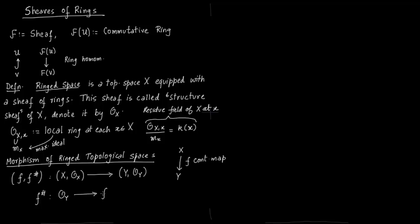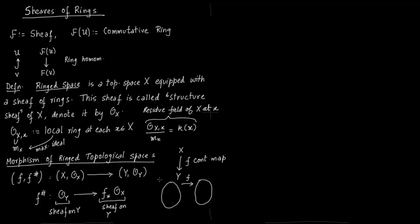F# is a morphism of sheaves of rings. Notice the direction of the arrow — both rings are defined on Y. We have discussed before how to construct this sheaf on Y via the continuous map F. To recap: you have spaces X and Y, a map F between them. You fix a set U in Y; there is a set F inverse of U in X. You know the sheaf O of X, so O of X evaluated at F inverse of U gives F star — the pushforward F★O_X.